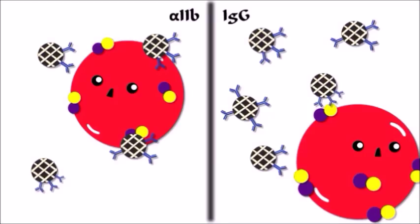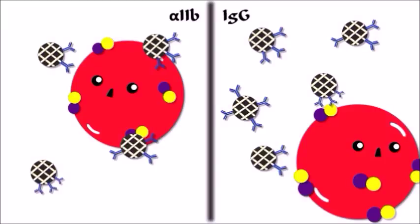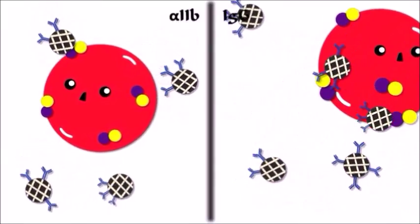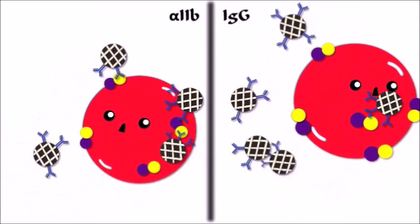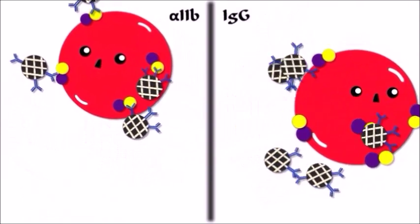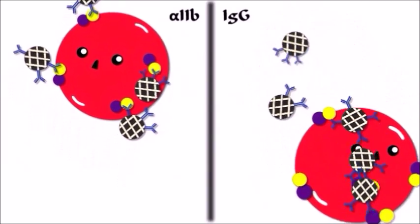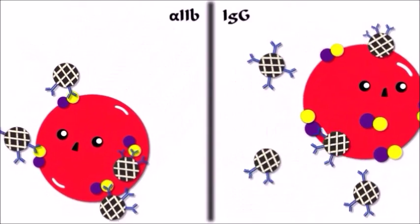In BlueBox, nanomagnetic beads with anti-integrin alpha 2b antibodies bind to platelet integrins. Under a BlueBox magnetic field, nanomagnetic beads with anti-integrin alpha 2b antibodies form nanoclusters with platelet fragments, while the ones with non-specific IgG are evenly distributed.